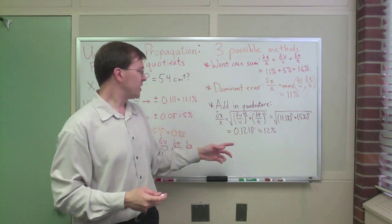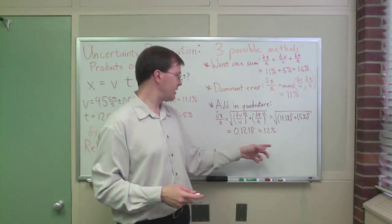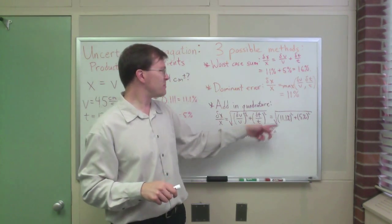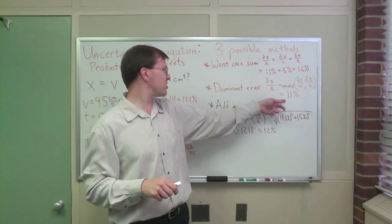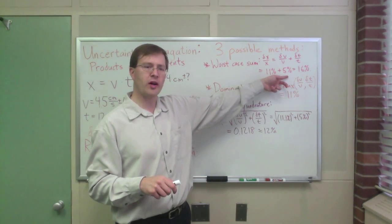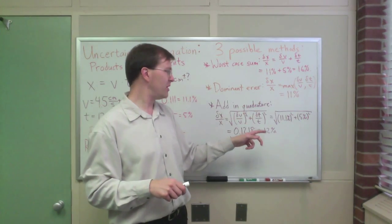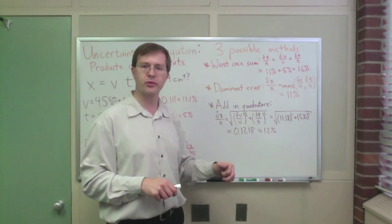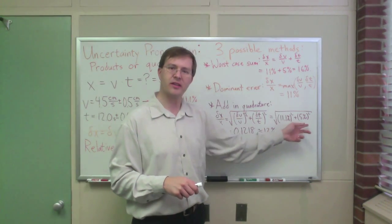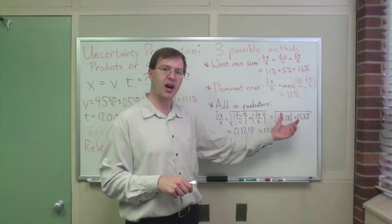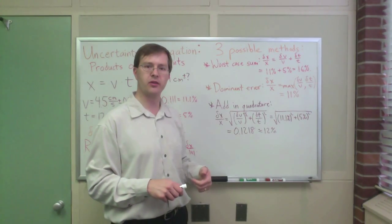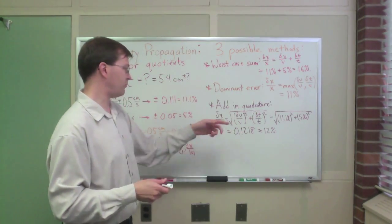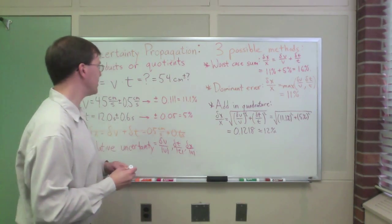Notice, though, as I've mentioned before, even though this is only about twice as big, the true result, the best result, the 12% uncertainty, is basically the same, is very close to the dominant error result, and is quite a bit less than the worst case sum. This is another illustration of how the dominant error approach is a very good approximation to the quadrature result in a lot of cases. And these aren't all that different. These numbers aren't all that different. The more different they are, the better an approximation dominant error turns out to be. Alright, so adding in quadrature, I get 12%, 12.18% if I want to be really picky about it.